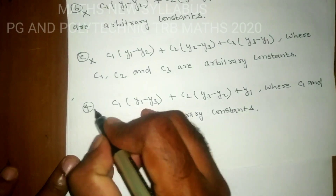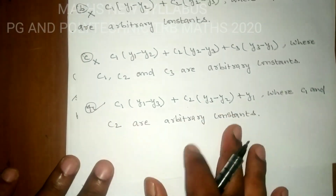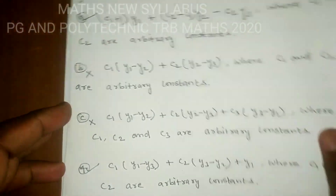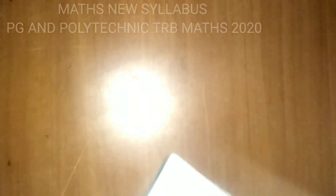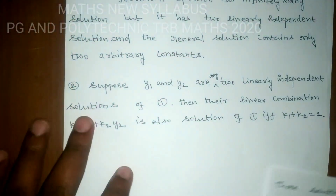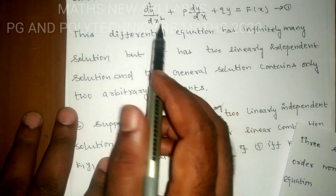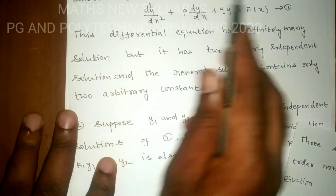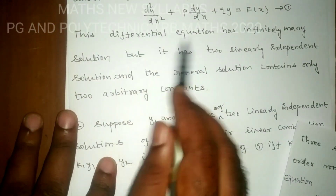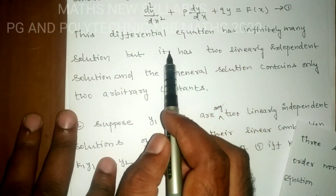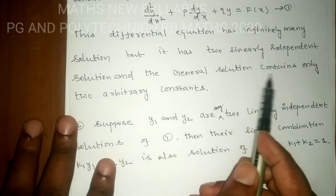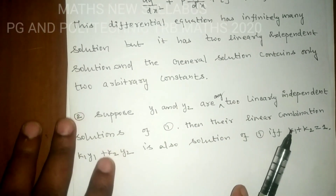Option D is also true. To summarize: for a second-order non-homogeneous differential equation, there are infinitely many solutions, but it has two linearly independent solutions and the general solution must contain exactly two arbitrary constants. Any linear combination of solutions is itself a solution if and only if the sum of the arbitrary constants equals 1.